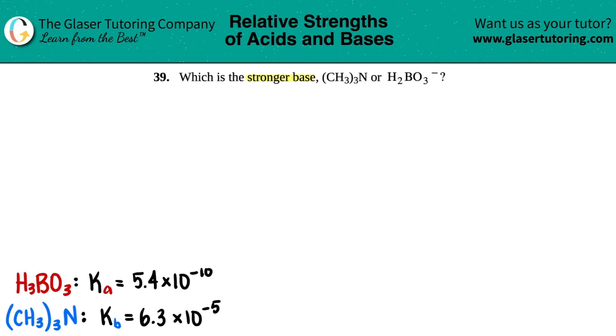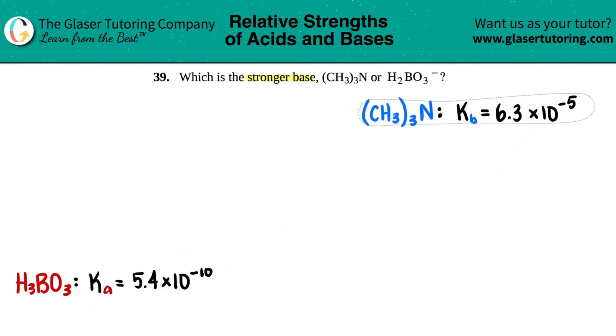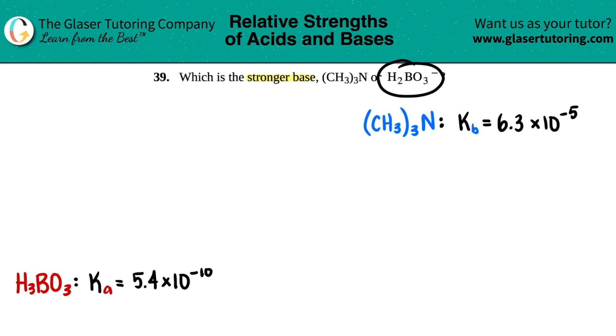I was able to find this one right spot on: (CH3)3N - that's a Kb value, and Kb stands for base, so this one I don't have to worry about. But when I was trying to search for the Kb value of H2BO3-, I couldn't find it on the appendix. There was no number, but I did find a very similar compound, H3BO3.